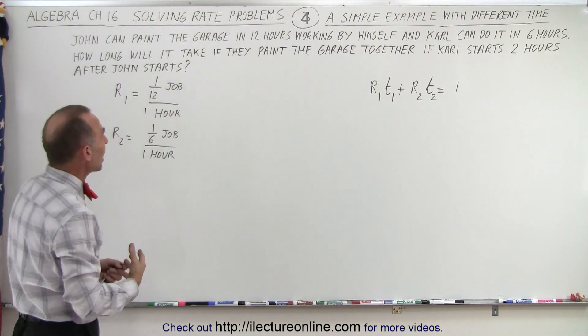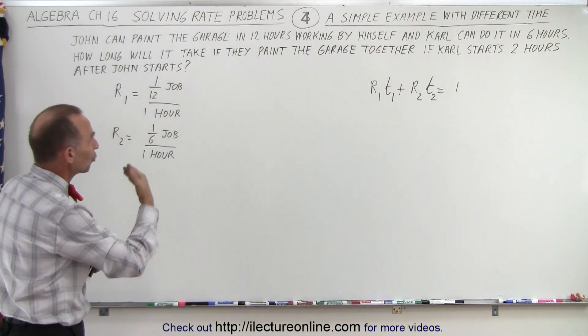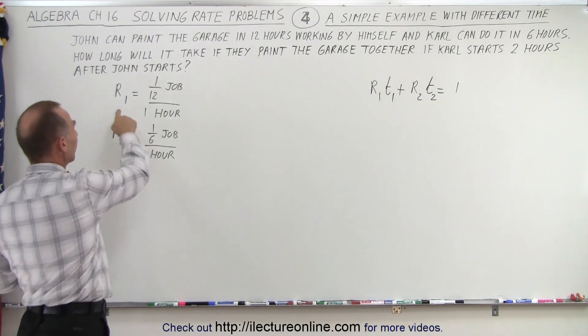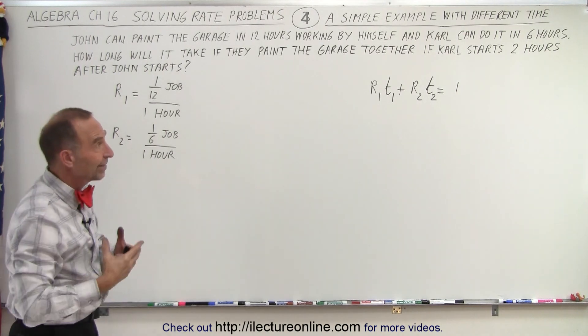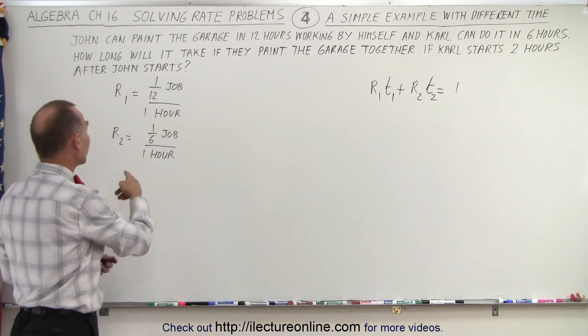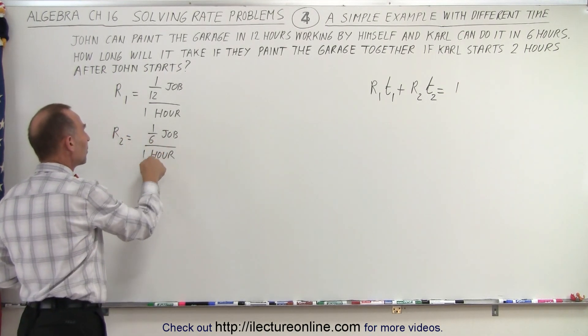Calculating the rate is still the same way. If John can paint the garage in 12 hours by himself, then the rate for John will be 1/12 of the job per hour. If Carl can do the job in six hours by himself, then the rate for Carl is 1/6 of the job per hour.